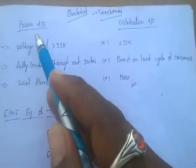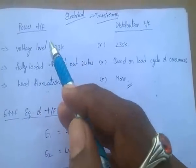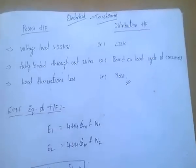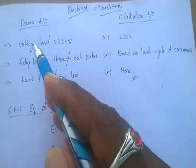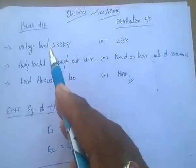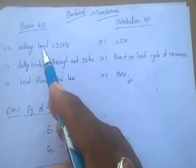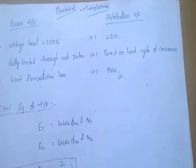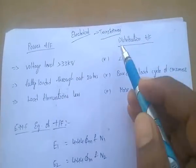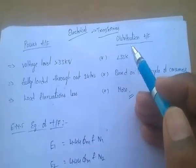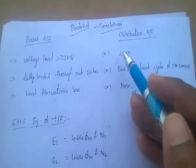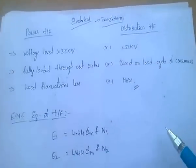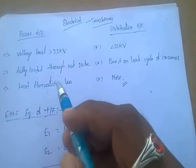The transformer which is used in generating stations where the voltage level is greater than 33 kilovolts is called a power transformer. Distribution transformers are used in substations and their voltage level is less than 33 kilovolts.